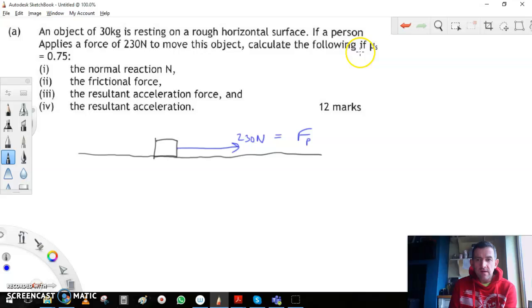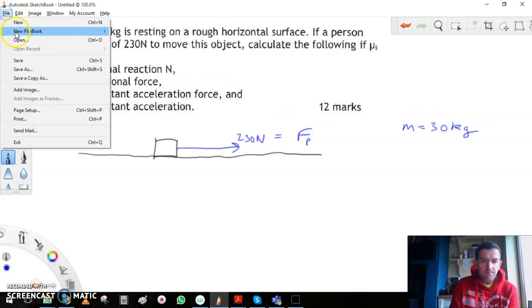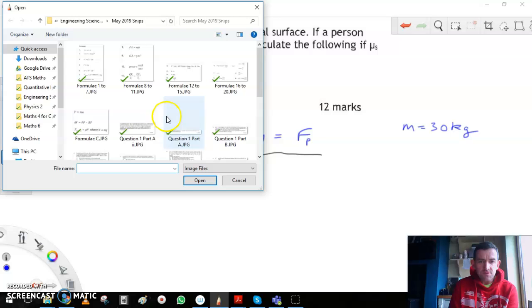What else is going on? We have to find the static friction for the object. The mass of the object was 30 kg. Now let me get some formulas to do with this.